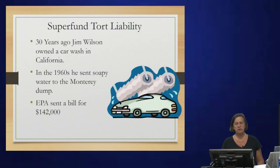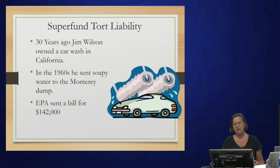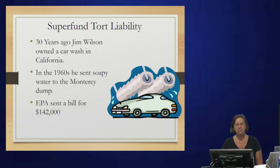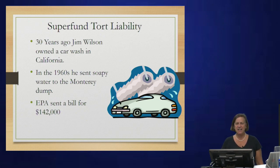Here's the case: Jim Wilson, 30 years ago, owned a car wash in Monterey, California. His soapy water ran into the dump at Monterey. In the 1960s, it was not illegal to do this. Now, just recently, he received a bill because the Monterey dump has been identified as an EPA Superfund site. He's been sent a bill for $142,000 — his share for the car wash. Liability is joint, several, and retroactive. He said he hasn't owned that car wash in years and forgot he ever owned it. The answer is: he probably does owe the bill. If he declines to pay, he could be liable for the entire $600 million cleanup, which would surely bankrupt him.